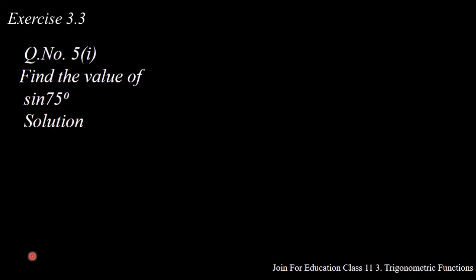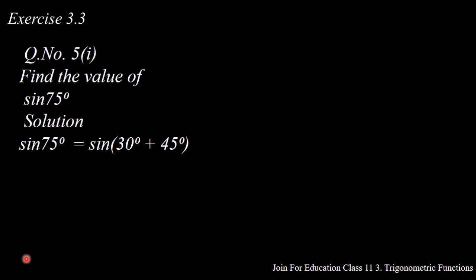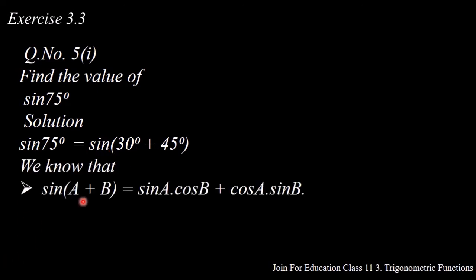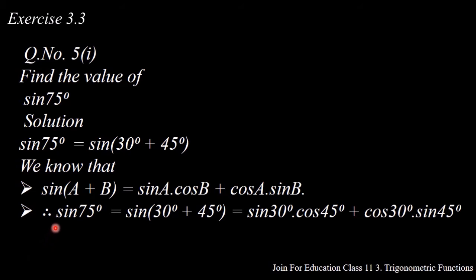Solution: sin 75 degrees equals sin(30 + 45) degrees. We know that sin(A + B) equals sin A cos B plus cos A sin B. Therefore, sin 75 degrees equals sin(30 + 45) degrees according to the sin(A + B) formula.